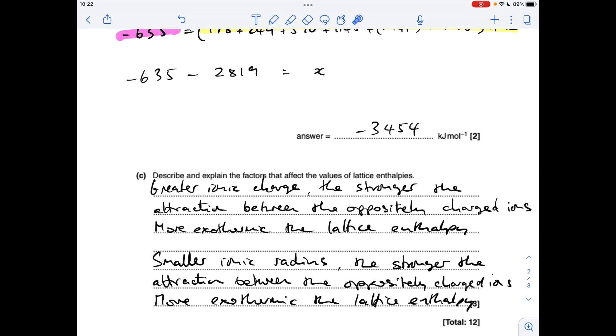And for ionic radius, it's the smaller the ionic radius, the stronger the attraction between the oppositely charged ions, the more exothermic the lattice enthalpy.